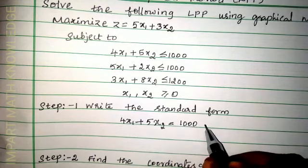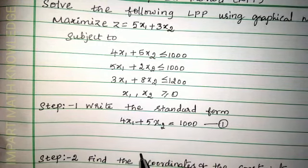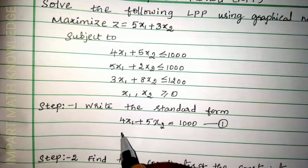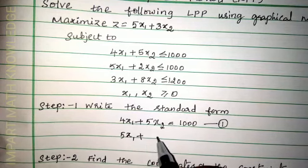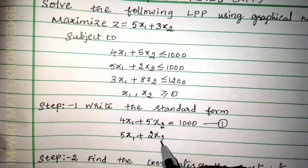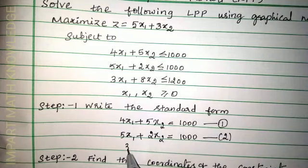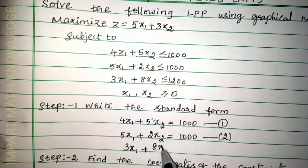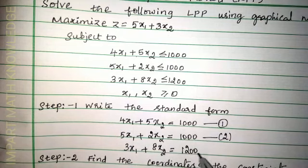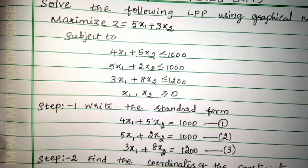We write the constraints in equality form. Constraint 1: 4x1 plus 5x2 equal to 1000. Constraint 2: 5x1 plus 2x2 equal to 1000. Constraint 3: 3x1 plus 8x2 equal to 1200. Step 1 is over.